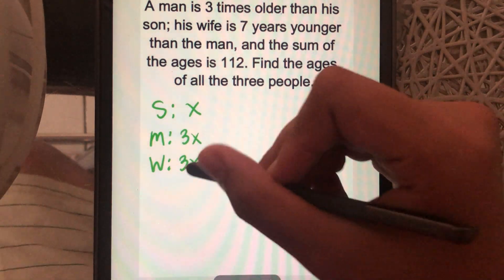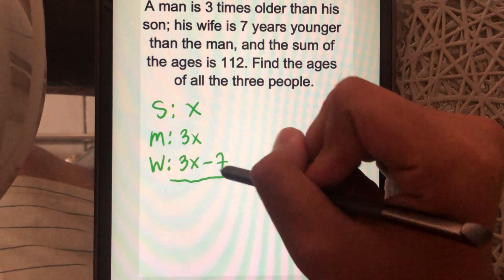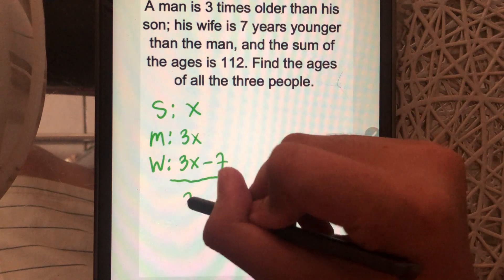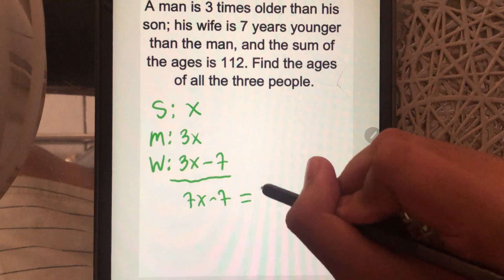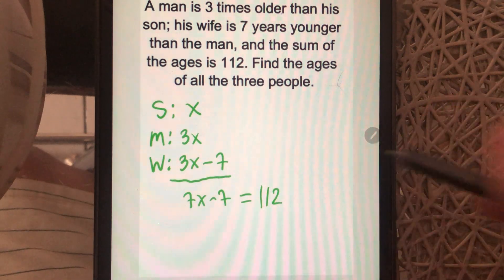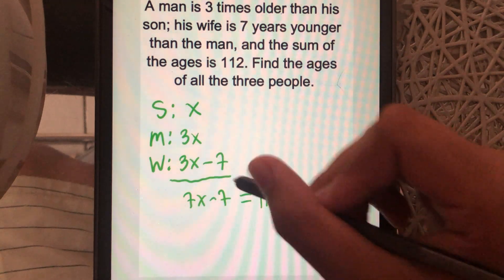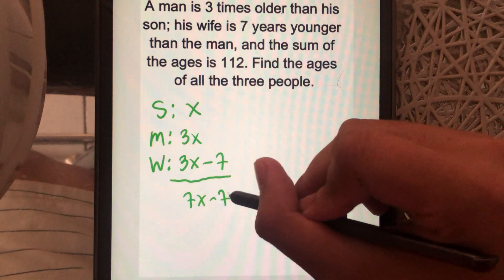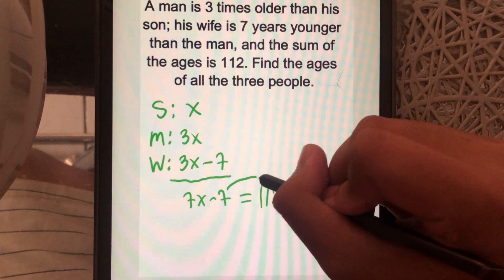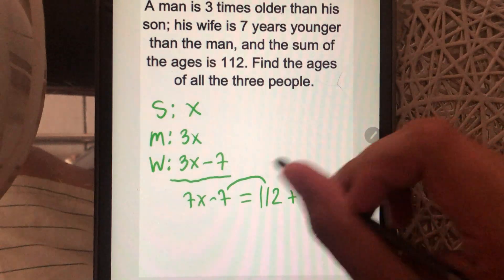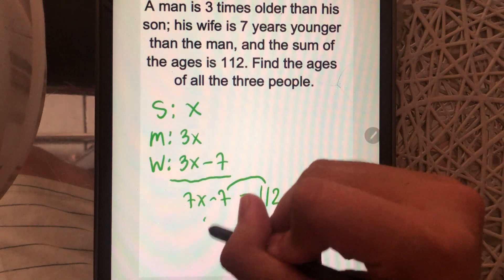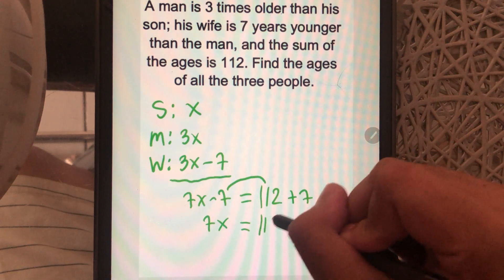If we add them together, it becomes 7X minus 7 is equal to 112. We can isolate the 7X. Move the 7 to the right, plus 7. It becomes 7X is equal to 119.